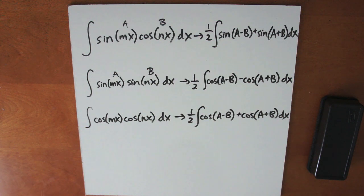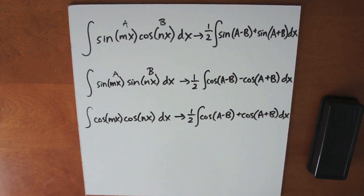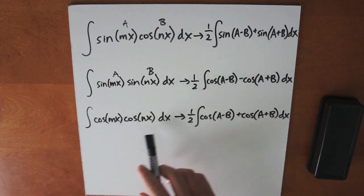The final forms of trigonometric integrals involve products of different angles. The integral of sin(mx) cos(nx) dx equals one half times the integral of (sin(a minus b) plus sin(a plus b)) dx. The integral of sin(mx) sin(nx) dx equals one half times the integral of (cos(a minus b) minus cos(a plus b)) dx. The integral of cos(mx) cos(nx) dx equals one half times the integral of (cos(a minus b) plus cos(a plus b)) dx, where a is the mx term and b is the nx term.